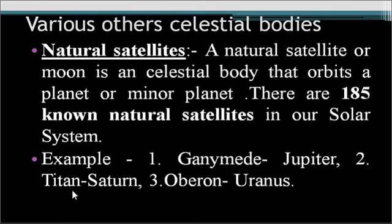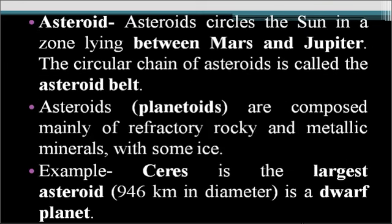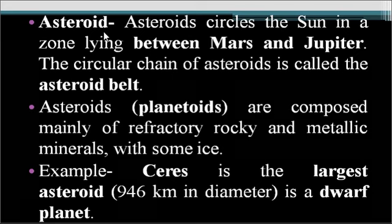Oberon is the moon of Uranus. Now, asteroids — this is also a very important topic. The term asteroid is frequently found in news and various current affairs topics related to astronomical objects and celestial bodies, making it an important topic from an examination standpoint.